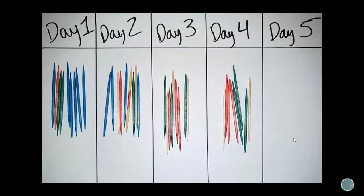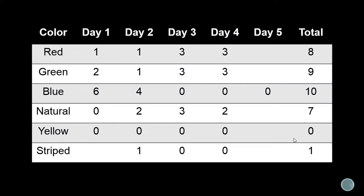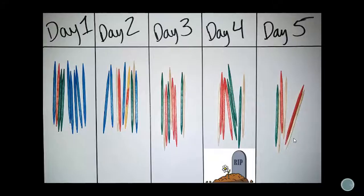On day four, we found these. If you count carefully, you'll notice that is not enough prey to keep our three birds alive. We have our first dead bird on day four. On day four, we collected three red, three green, and two natural colored ones. Then on day five, we actually found all the rest of them except for the poisonous ones.